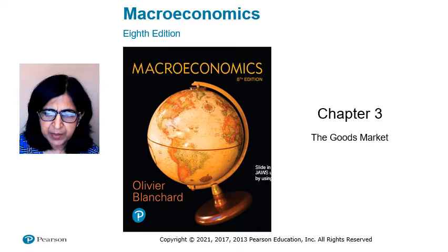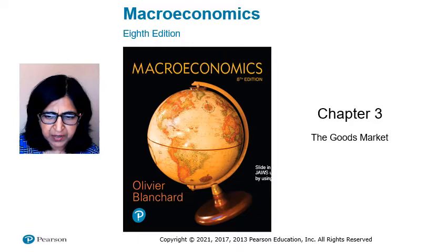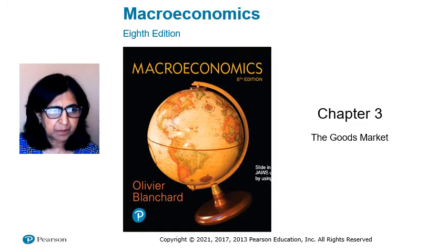This chapter also shows how fiscal policy affects output. If you remember one basic message from this chapter, it should be: in the short run, demand determines output.